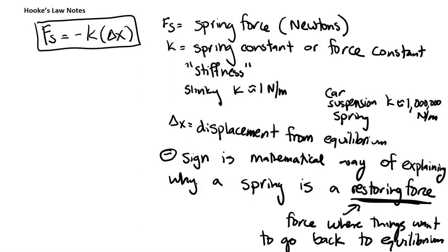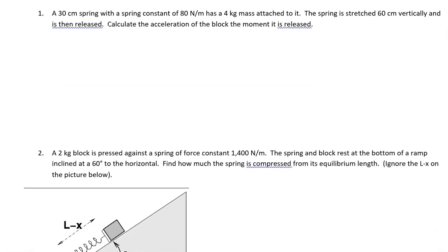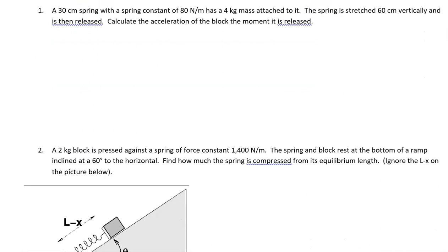So let's go ahead and solve some problems involving this. We're going to go ahead and do number one first. So we have a 30 centimeter spring with a spring constant of 18 newton meters, so that's going to be the K value, has a mass of four kilograms attached to it. The spring is stretched 60 centimeters vertically and is then released. Calculate the acceleration of the block the moment it is released.